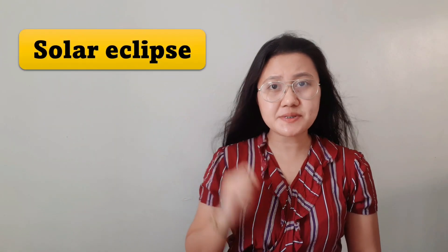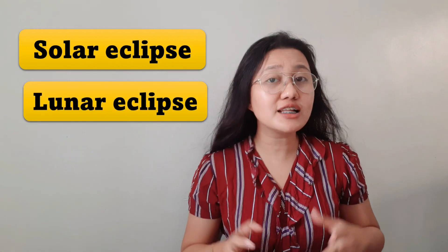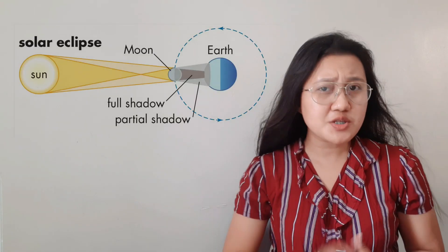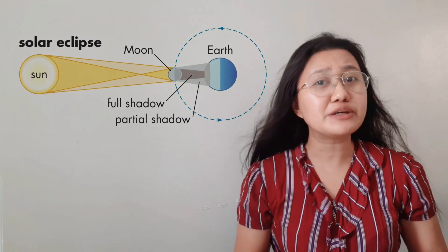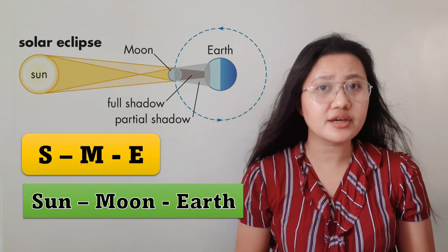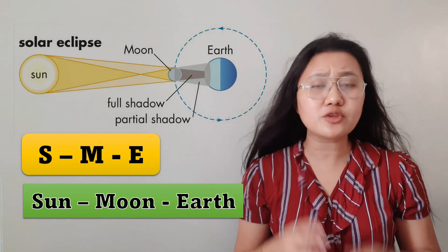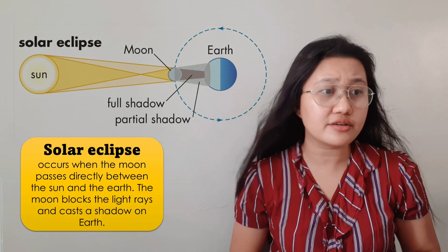There are two types of eclipse: the solar eclipse and the lunar eclipse. For the solar eclipse, remember the acronym SME — Sun, Moon, and Earth. A solar eclipse occurs when the moon passes directly between the sun and the earth.